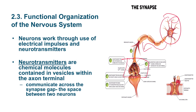On the other side of this gap is the receiving dendrite of the next neuron. This is how communication occurs: traveling through the axon, releasing and stimulating the neurotransmitters, which travel through the gap and stimulate the receiving dendrite, which then fires information out to the next neuron.